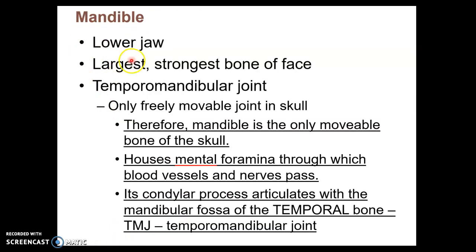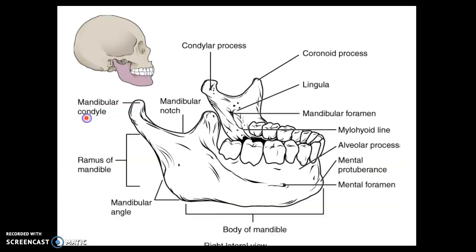We're going to start with the mandible, which is the lower jaw. The mandible is the only movable bone in the entire skull — out of all 14 facial bones and eight cranial bones, only the mandible moves, as a result of the TMJ joint with the temporal bone. It houses some foramina, which are holes in the chin region, the mental region. Its condylar process articulates with the mandibular fossa of the temporal bone, which we saw in one of the first two videos on the cranial bones.